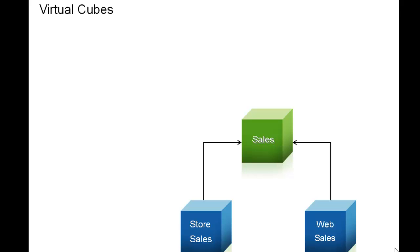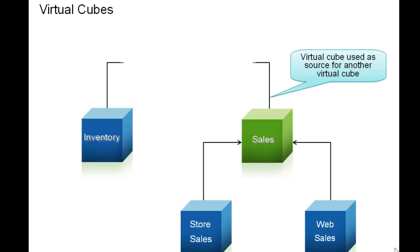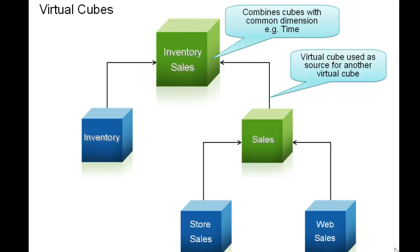A virtual cube is defined as two cubes, real or virtual. Cubes can be merged in pairs to any depth. A virtual cube can be used as a source for another virtual cube. A virtual cube can be two cubes, two virtual cubes, or one cube and one virtual cube, as seen here.